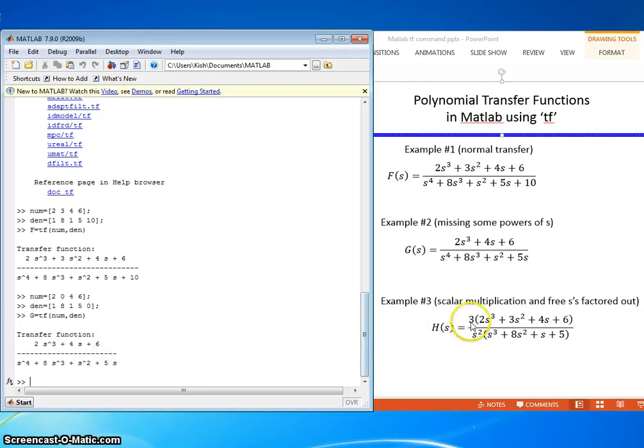So let's do example 3 now where maybe we have a scalar out here multiplying the numerator. And then maybe instead of showing, like we could have factored out this s here in example 2, but they didn't. This time they went ahead and factored out the free s's, and there was two of them. How would you account for that?